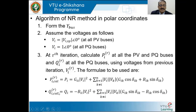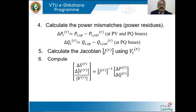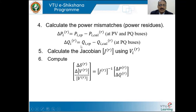QI calculated at the R-th iteration is equal to minus BII·VI² plus summation K=1 to N, K≠I, of VI·VK·(GIK·sin(δIK) − BIK·cos(δIK)). Using these two formulas, we calculate the active and reactive power at the i-th bus, then calculate the power mismatches, also called power residues. ΔPI(R) is PI specified minus PI calculated, and ΔQI(R) is QI specified minus QI calculated at PQ buses.